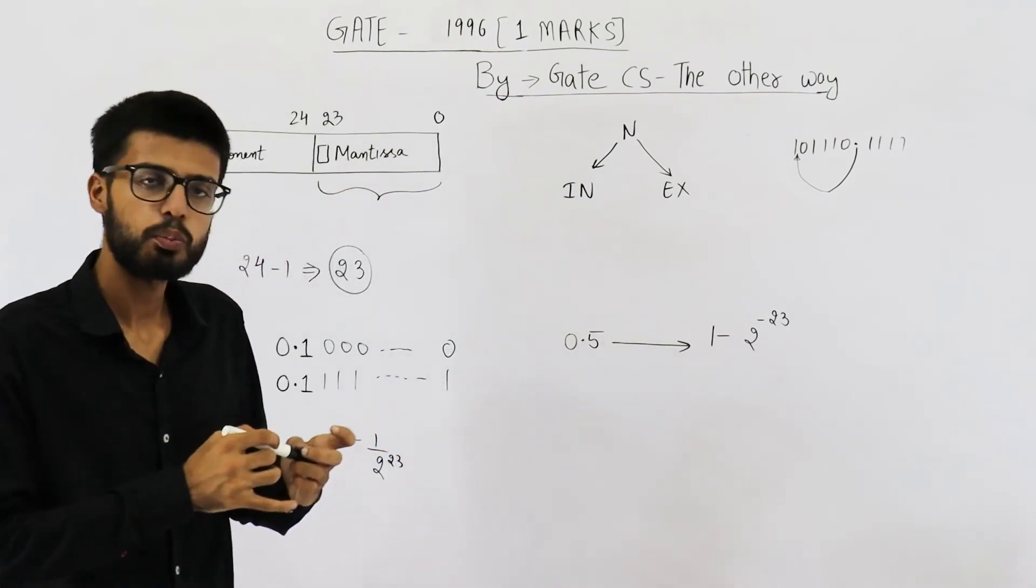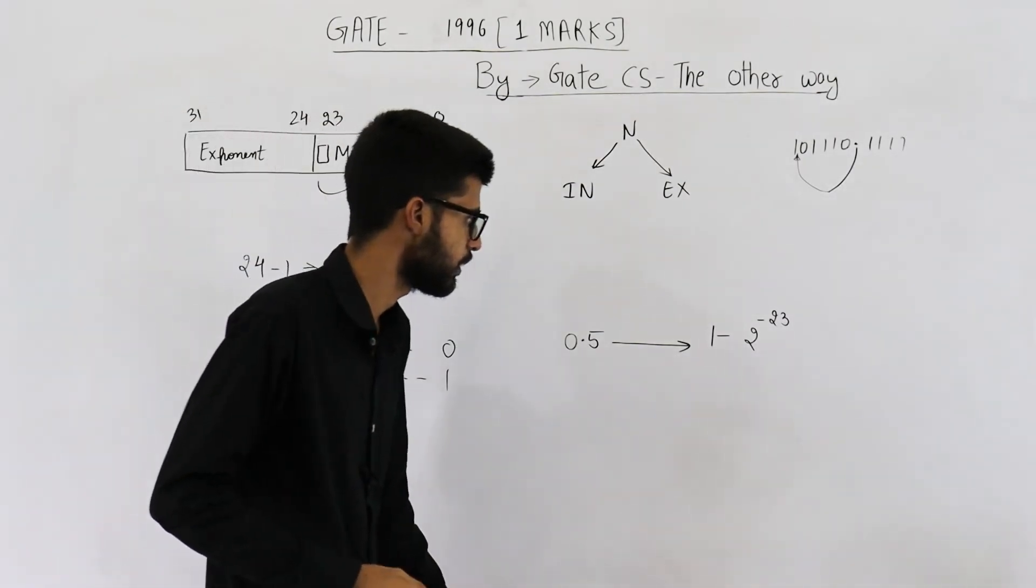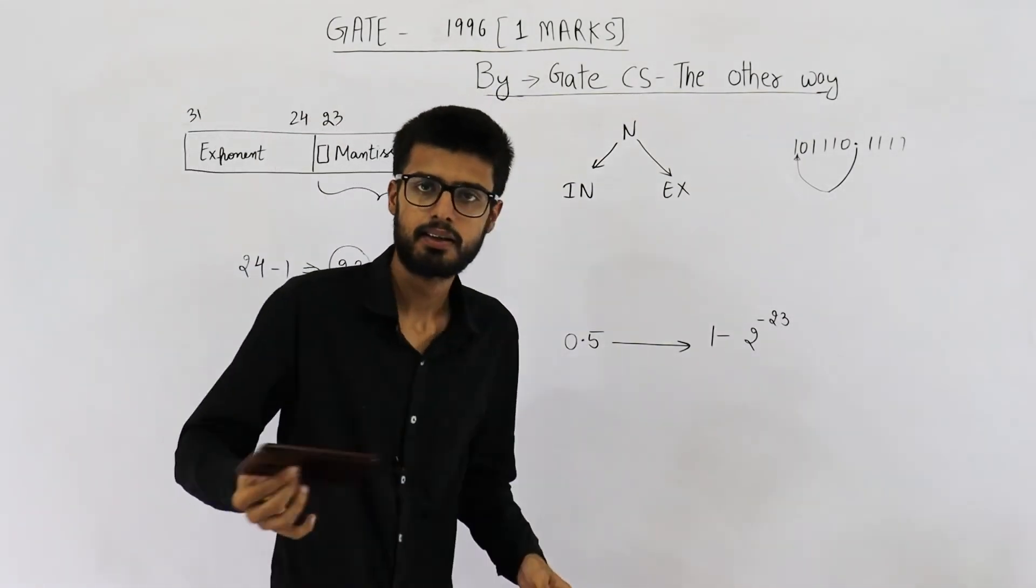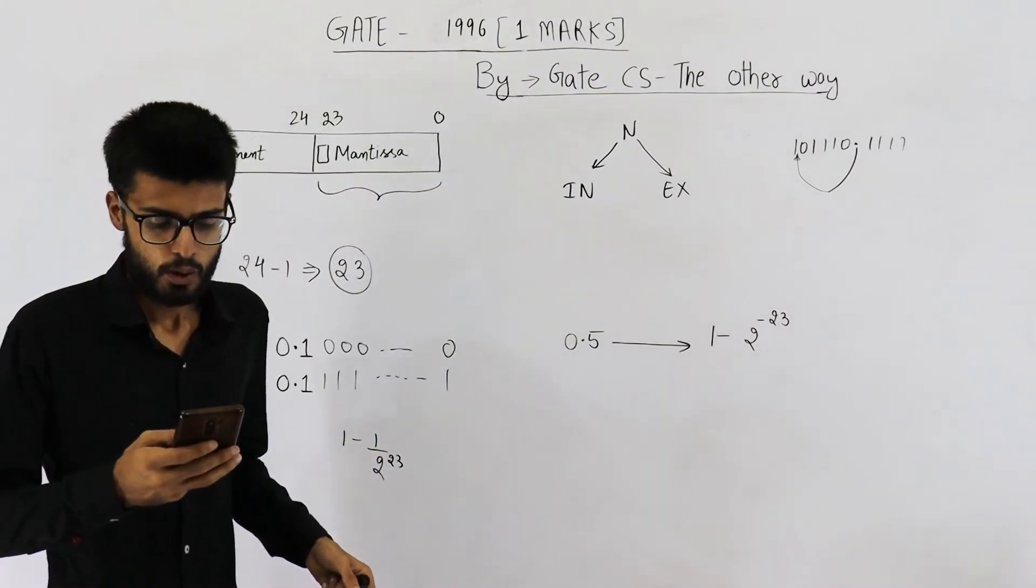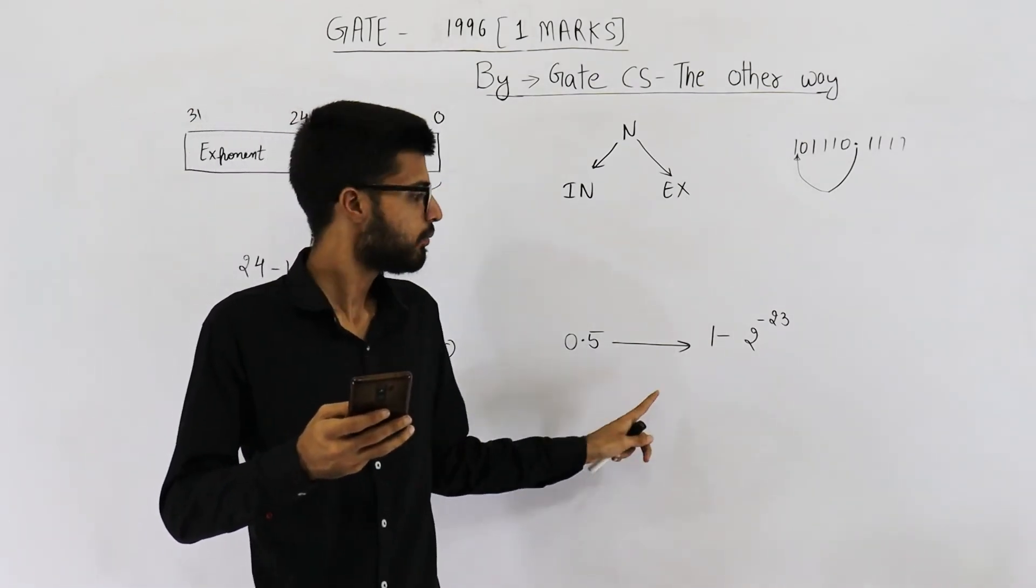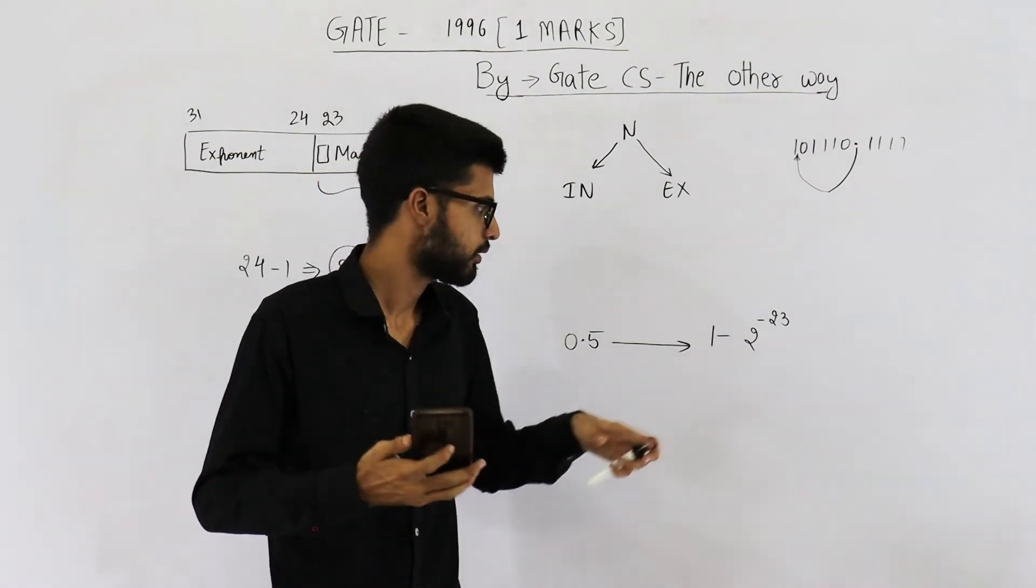This is your answer. It is probably option D. Let me still verify if everything is correct. Yeah, option D says 0.5 to 1 minus 2 raised to the power minus 23, yes.